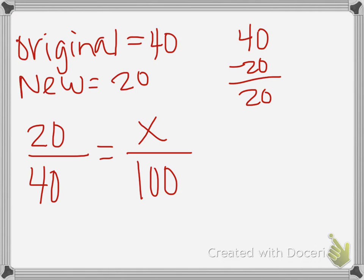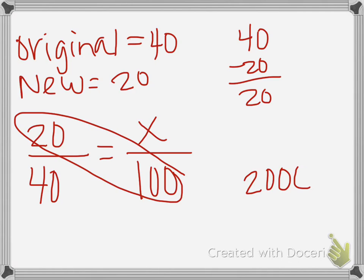Now we have the option to simplify or cross multiply and divide. So most of you are going to choose the cross multiply. 100 times 20 is going to give us $2,000.